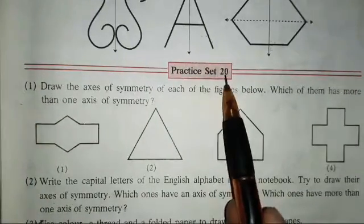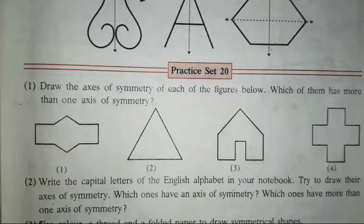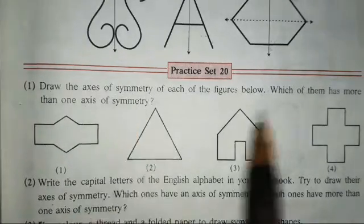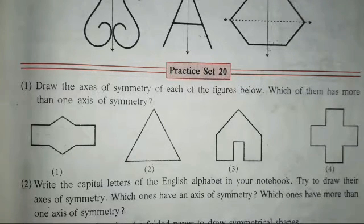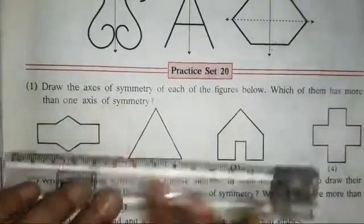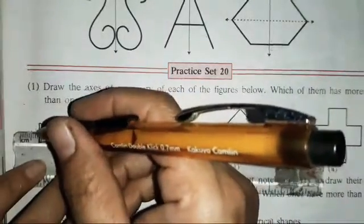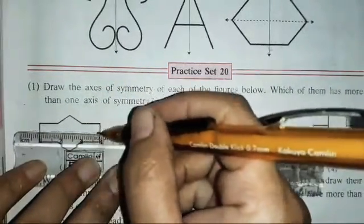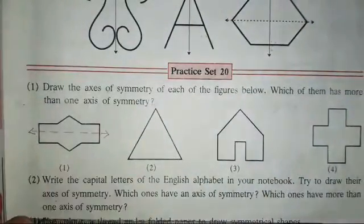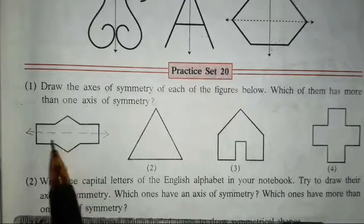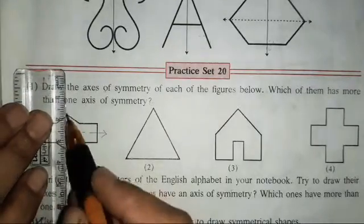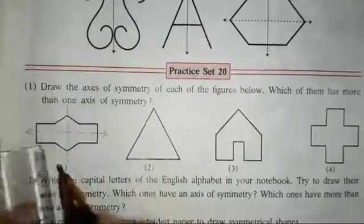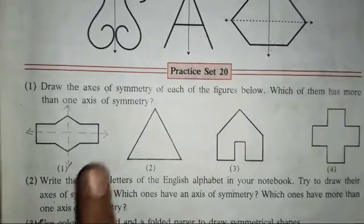In practice set number 20, there are a few figures given. You all have to just draw an axis of symmetry. Which of them has more than one axis of symmetry? You all have to show how many symmetrical axes you can draw to divide the figure into two symmetrical parts. So this figure can be divided into two parts — I will show you how. You can draw a dotted line directly in the textbook. This is the first symmetrical axis, and second, we can draw it this way also. So two symmetrical axes we can draw for this figure.